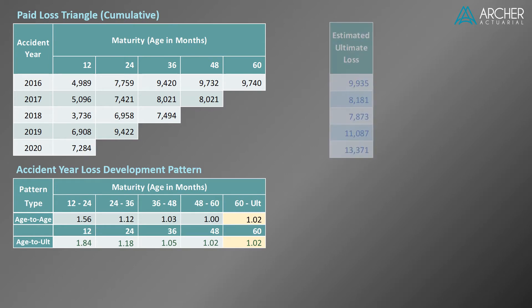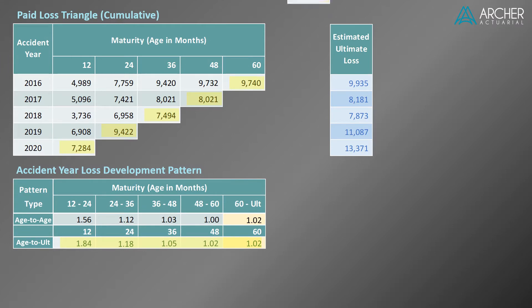We used the paid loss amounts in the last diagonal of this triangle and our recently calculated age-to-ultimate factors. Next, we're going to simplify things by looking at the data from the perspective of a single point in time — specifically 12/31/2020. The data along the last diagonal in our paid loss triangle is evaluated as of 12/31/2020.